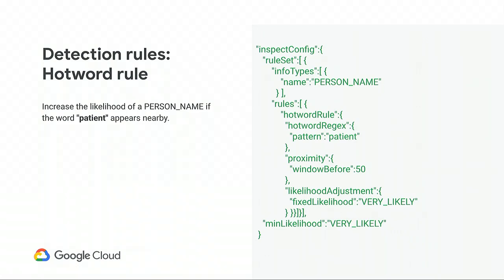Here's a second example. We have a dataset with names we'd like to redact. The doctor names aren't important to protect, but the patient names we need to redact. Because they both show up as findings, in the normal operating mode they'd both be redacted equally. But in this case I can boost the likelihood of my patient names by including a hot word rule that looks for words nearby the name — in this case the word 'patient' — and by setting min likelihood to 'very likely,' only the patient names will be redacted while the doctor names are left alone.